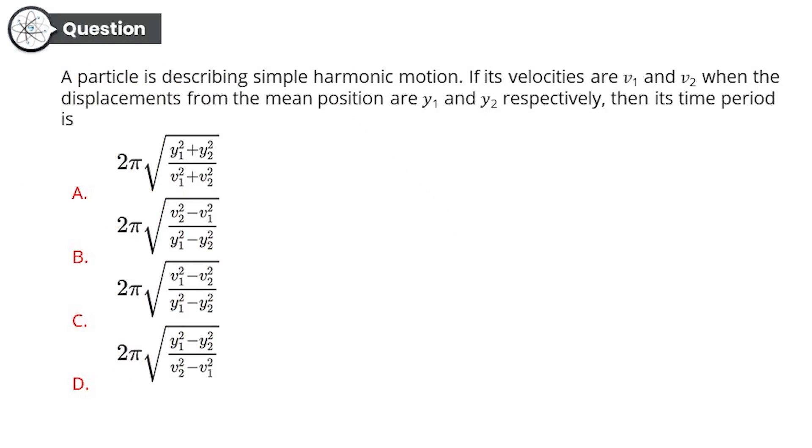So guys, we are into the final question today. I hope you really enjoyed this quiz series as well. And you know, in that way, I am also enjoying a lot. Thank you so much for it. So moving on to question number 10. A particle is describing simple harmonic motion. If its velocities are V₁ and V₂ when the displacements from the mean positions are Y₁ and Y₂ respectively, then its time period is how much?